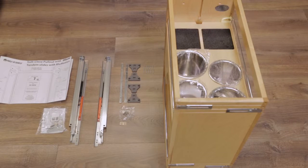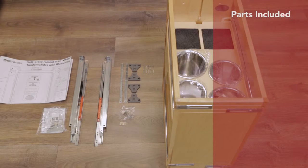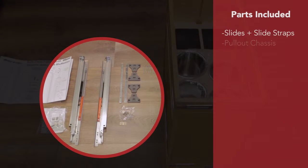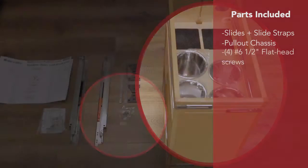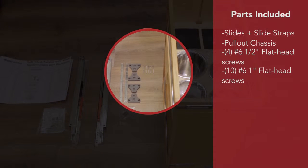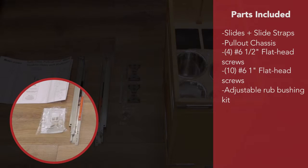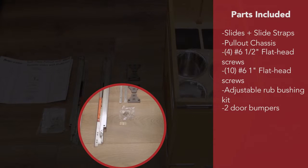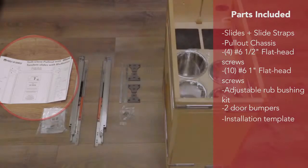In your box you should find the following parts: slides and slide straps, pullout chassis, four number six half inch flathead screws, ten number six one inch flathead screws, adjustable rub bushing kit, two door bumpers, and installation template.